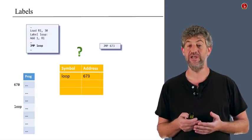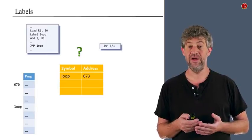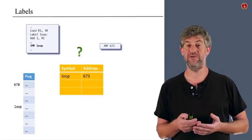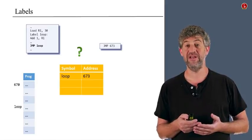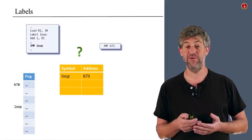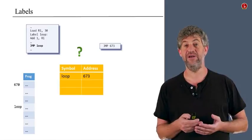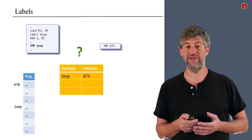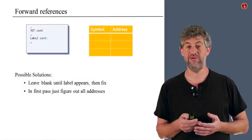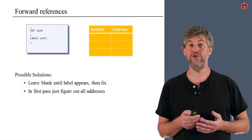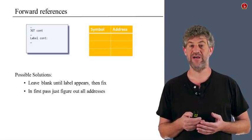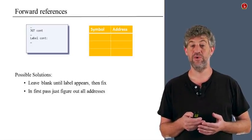When we actually get to a place that uses this label — a jump instruction that references this symbol — we already have in our table the correct address. That's basically how label information is put into the table and read from it when needed. Now there's one extra complication: sometimes we can jump to a label before the label was actually defined. This is called a forward reference.